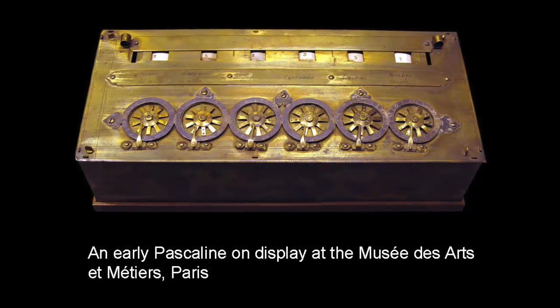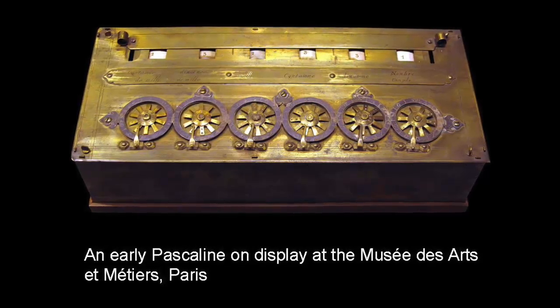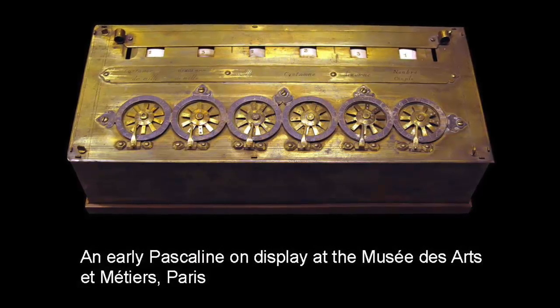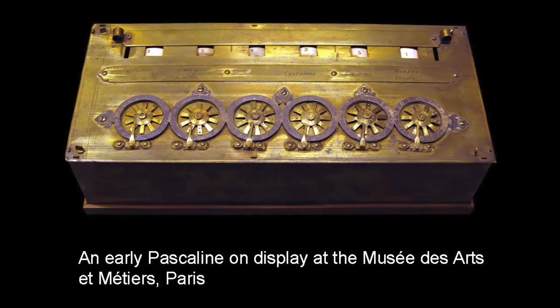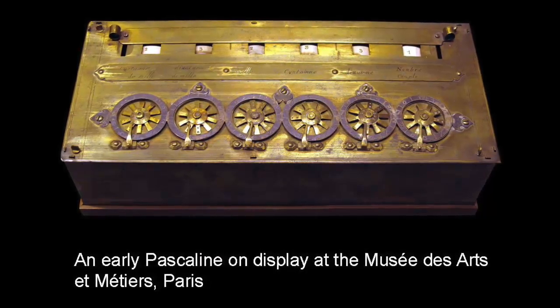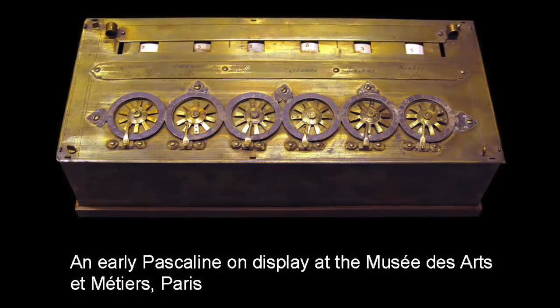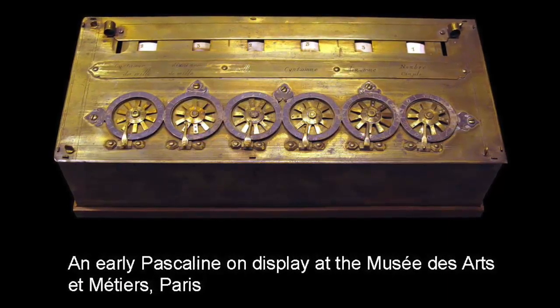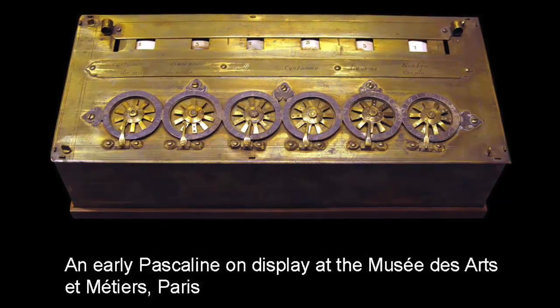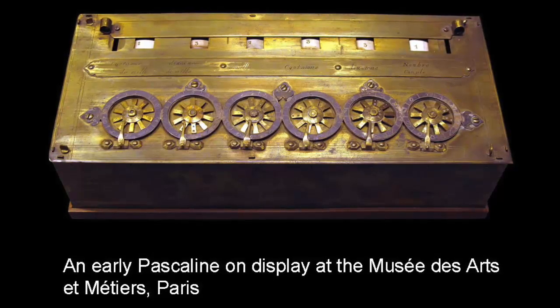The Pascaline, as it became known, consisted of a box containing six sets of pinwheels and cylinders. Each cylinder bore the digits 0 to 9 around its edge, and was so arranged that only one figure equivalent to one-tenth of the circumference could be seen through the sight hole at any given time. The pinwheels were connected to the six horizontal dials at the front, so that when the dial was turned, the corresponding pinwheel and cylinder turned with it.